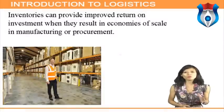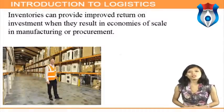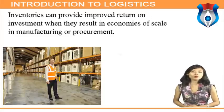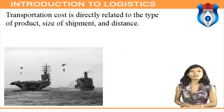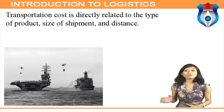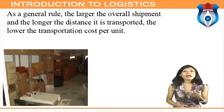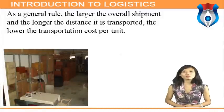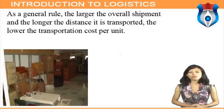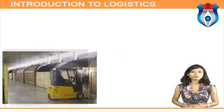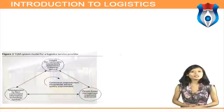Inventories can provide improved return on investment when they result in economies of scale in manufacturing or procurement. The objective is to reduce and manage inventory to the lowest possible level while simultaneously achieving desired operating objectives. Movement consolidation — transportation cost is directly related to the type of product, size of shipment, and distance. As a general rule, the larger the overall shipment and the longer the distance transported, the lower the transportation cost per unit. Premium transportation is typically high cost, so to reduce transportation cost it is desirable to achieve movement consolidation.